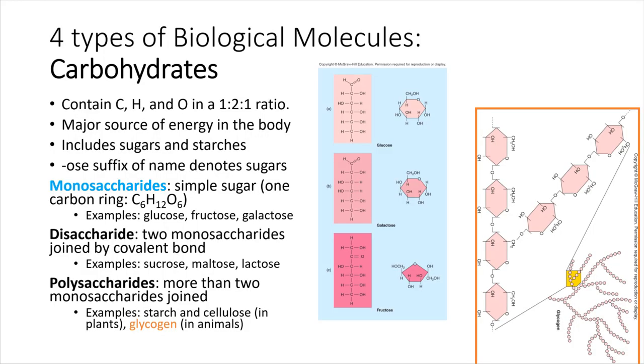Our first grouping of biological molecules are the carbohydrates. Let's review these together. The carbohydrates include the sugars and the starches, and in terms of physiology, these provide a really quick source of energy that can be used in the body.